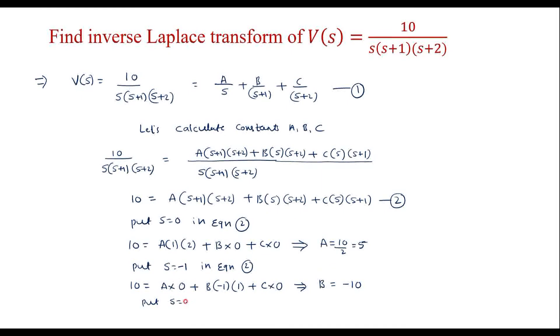Now put s equals -2 in equation 2. We will get 10 equals 0. The A term and B term will both be 0. So we will get C term as s is -2 times -1. Solving this, we will get C equals 5.